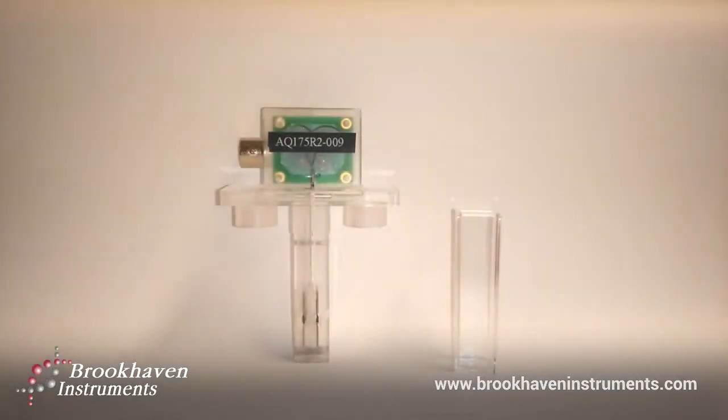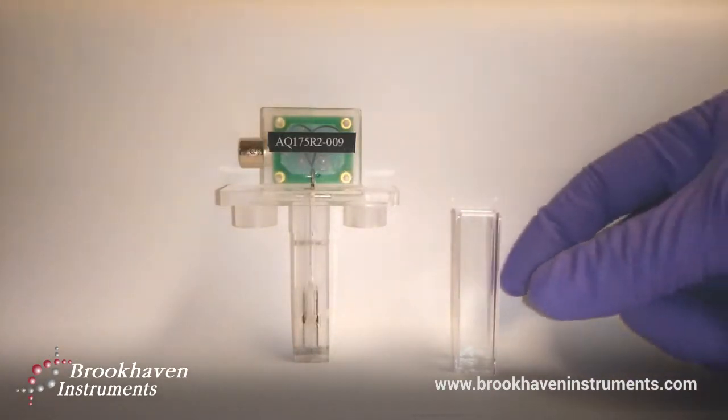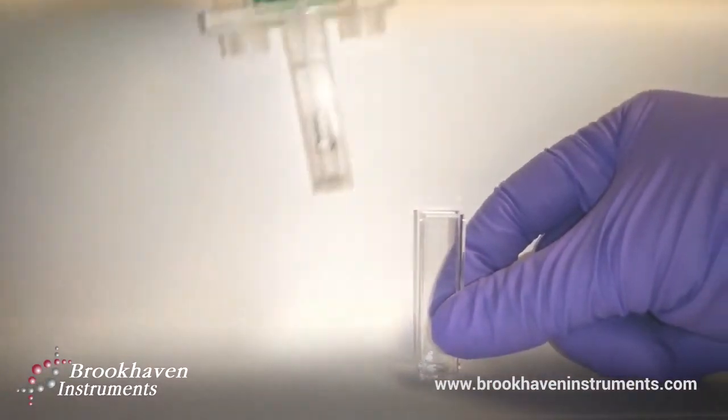To prepare for measurement, just take a disposable square cuvette and insert the electrode until snug.